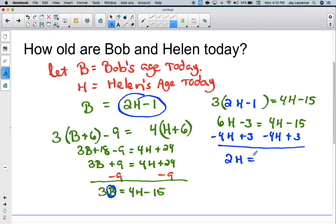Now I don't like having H's on both sides. So I'm going to subtract the 4H and add 3 to both sides. And I'm going to get 2H equals 18. So I divide by 2 and get that Helen must be 9 years old. Bob's age will be twice Helen's, so Bob is going to equal 2(9) - 1, and therefore Bob is 17.